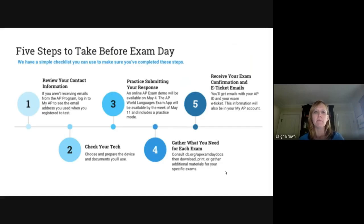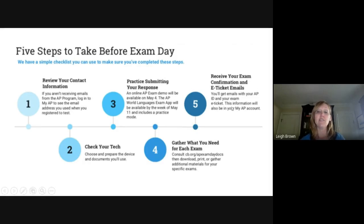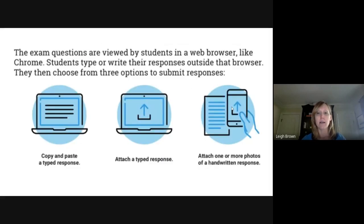These are the five things you've hopefully already done. Make sure you practiced with the demo — the link has been sent out. You should have your e-ticket, which you should have received yesterday either through your email or through your My AP account. Make sure you've located that today because you need your AP number.